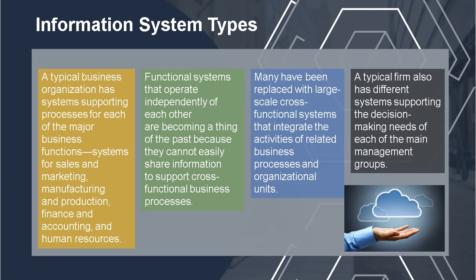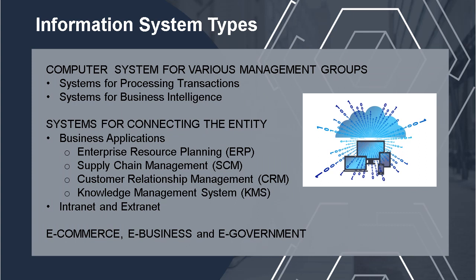Many have been replaced with large-scale cross-functional systems that integrate the activities of related business processes and organizational units. A typical firm also has different systems supporting decision-making needs for each main management group. The summary of information system types includes: under computer systems for various management groups — systems for processing transactions and systems for business intelligence; under systems for connecting the entity — business applications including enterprise resource planning, supply chain management, customer relationship management, knowledge management systems, and intranet and extranet; and lastly, e-commerce, e-business, and e-government.